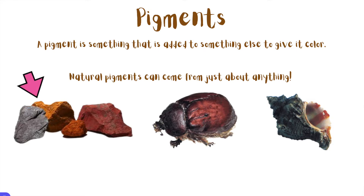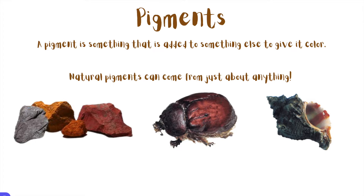On the left here, we see what is called ochre. It's a type of rock, and it was used to make paints and dyes by indigenous people. In the middle, we see what is called the cochineal beetle. It was used by the Aztecs in ancient times, and it's still used in different pigmented products today. It's a small beetle, and when it's crushed up, its blood contains a really bright red pigment used to make dyes. And finally, we see the Murex shell, which was crushed up and used to make a purple dye in ancient times.